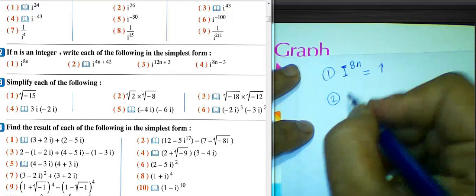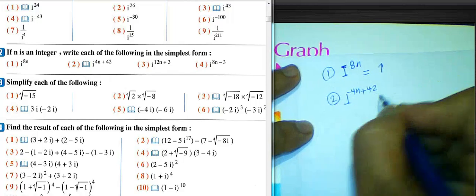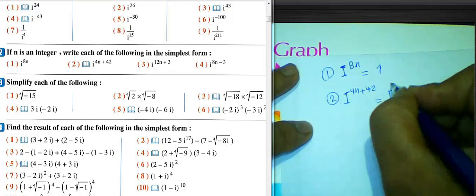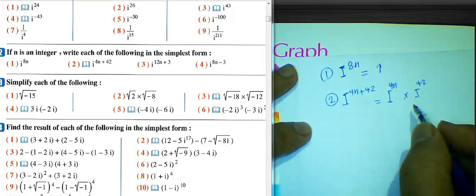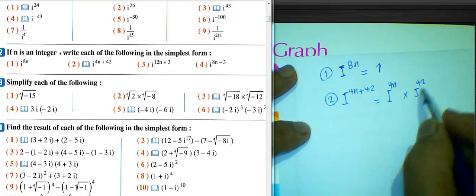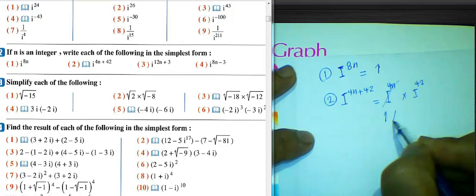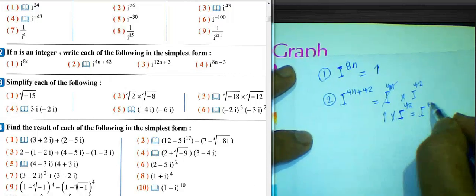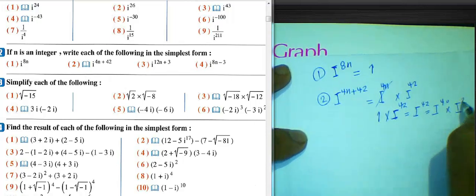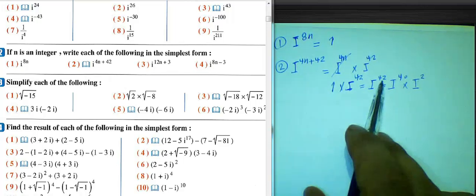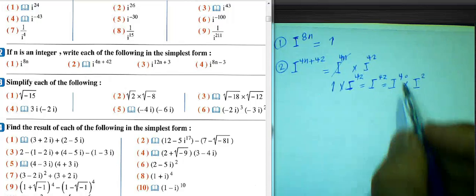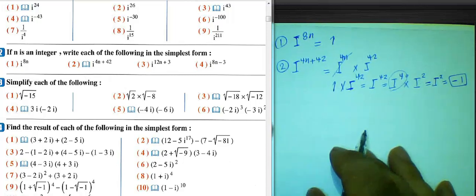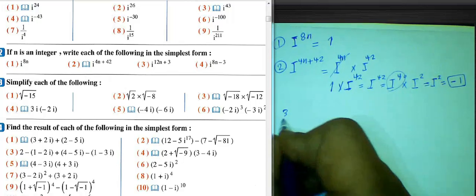Number 2: i^(4n+42). We can write this as i^(4n) times i^42. i^(4n) equals 1. For i^42, we write it as i^40 times i^2. i^40 equals 1, so 1 times i^2 equals i^2, and i^2 equals negative 1. The result will be negative 1.